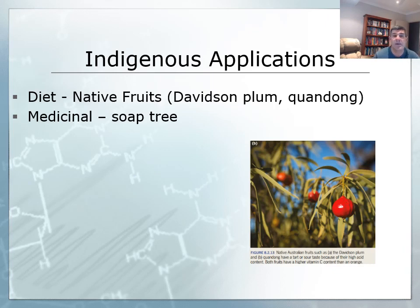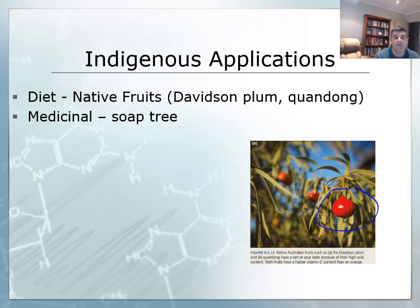For indigenous applications, there are again a number of these that you might like to have a look at. They fall into two main categories: they are either part of the diet or they have some medicinal applications. You can see photographs of the Kwondong here, and other applications of Aboriginal and Torres Strait Islander peoples' use of acid-base techniques can be seen in some of the medicinal preparations. We've benefited a great deal from their knowledge of which types of plants produce which types of chemicals and what they can be used for. This is again a good opportunity for a case study into indigenous applications of acid-base techniques.